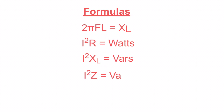Before we go any further, let's quickly go over the formulas we'll be using. The formula for inductive reactance is XL, measured in ohms, and equals 2π times frequency times inductance. For power: I²R gives us true power in watts — the resistive or active power being dissipated. I²XL gives us reactive power. And I²Z gives us our apparent power in VA.